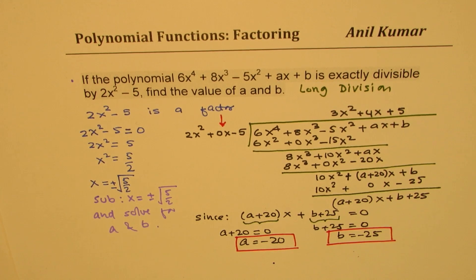This is a much simpler method. Do long division, and equate the remainder to 0, to ensure that 2x squared minus 5 is a factor.